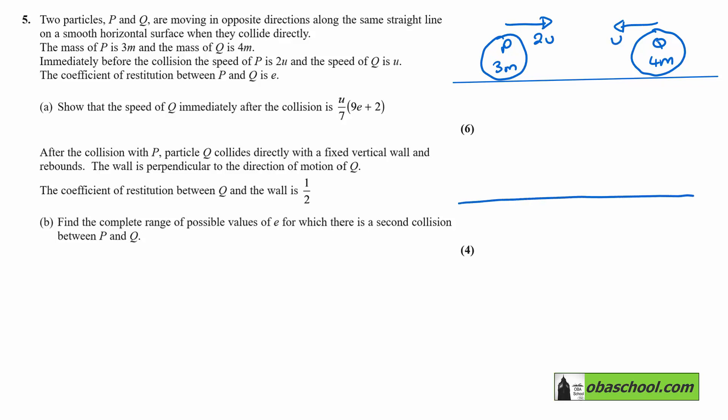And then we have the situation after the collision. So there's P and Q. So P, 3m. And I'm going to call this velocity here V1, and then Q, which is 4m. And let's call this one V2.